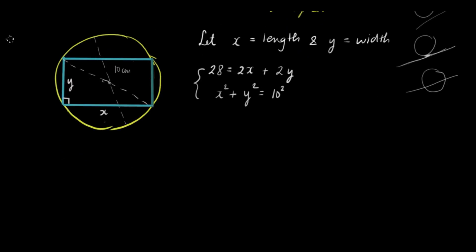And then let's solve. We can divide the first equation by 2 and it will become 14 equals x plus y. And then we can solve for y and transfer x to the other side. We have 14 minus x is equal to y.